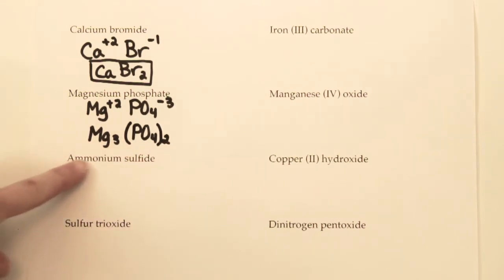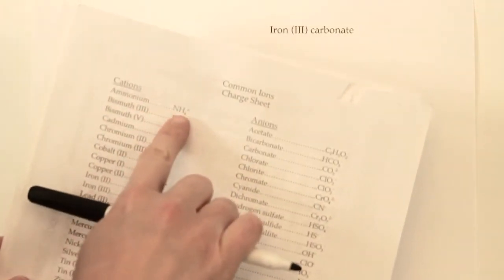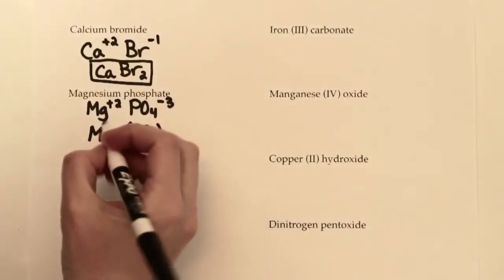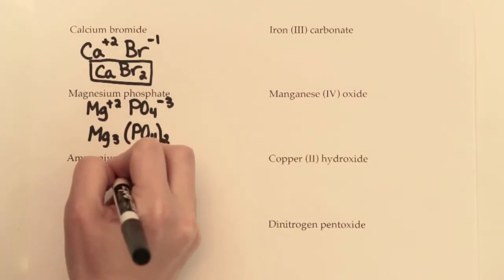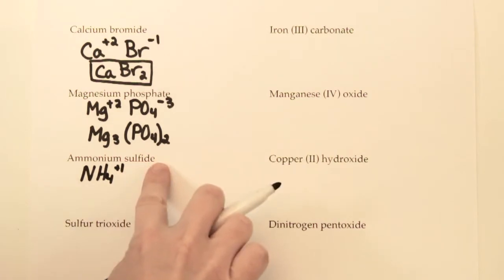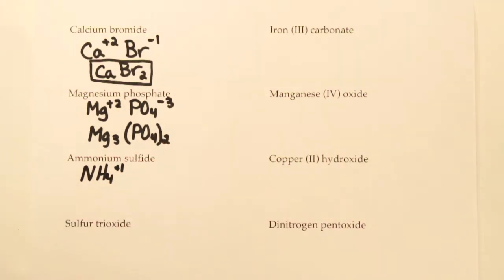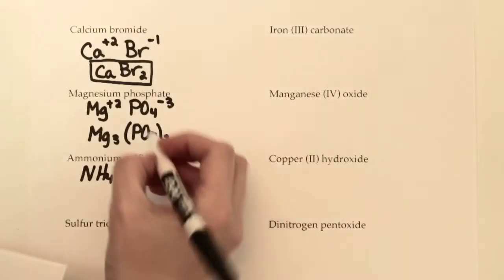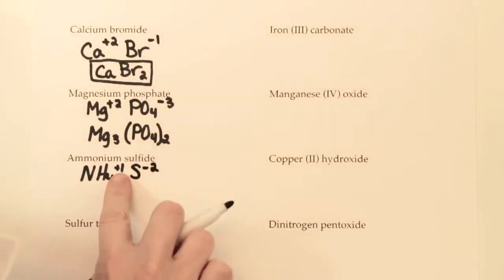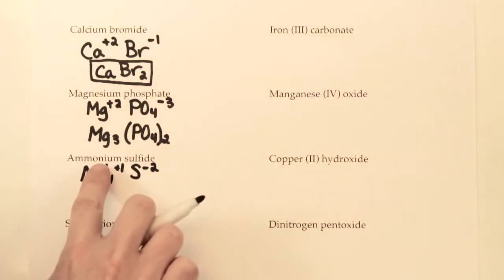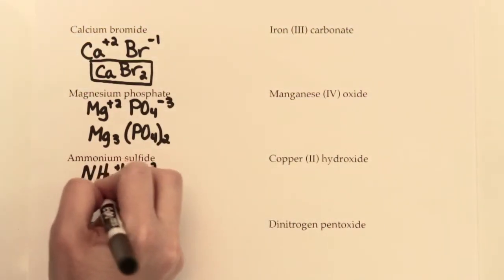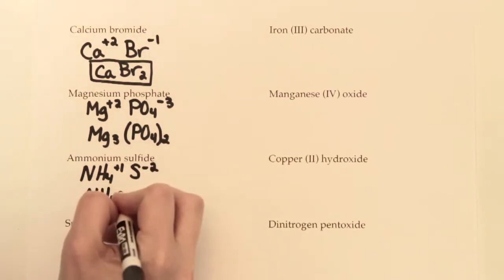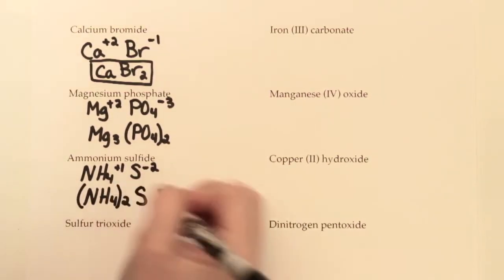For ammonium sulfide: ammonium is the only positive polyatomic ion on the charge sheet — NH₄ with a +1 charge. Sulfide has the -ide ending and sounds like sulfur. Sulfur forms a −2 charge in compounds. To balance +1 and −2, we need two ammonium ions. Since NH₄ is polyatomic, we put it in parentheses so it doesn't look like NH₄₂. The formula is (NH₄)₂S.